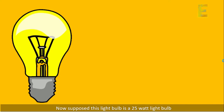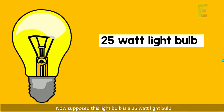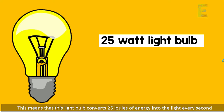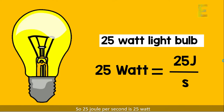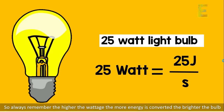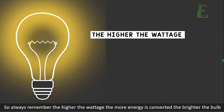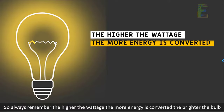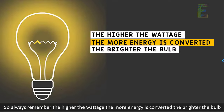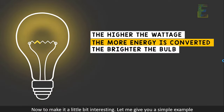Now, suppose this light bulb is a 25-watt light bulb. This means that this light bulb converts 25 joules of energy into light every second. So 25 joules per second is 25 watts. Always remember: the higher the wattage, the more energy is converted, and the brighter the bulb.